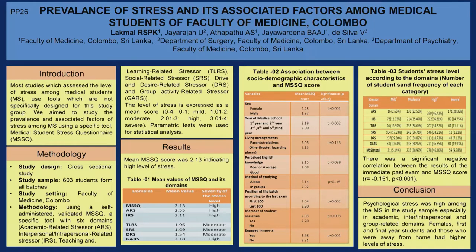In the results, we found the mean value of the total score is 2.20, which indicates a high level of stress. When considering the domains, academic related, inter or intrapersonal related, and group activity related stressors were higher than the other domains.